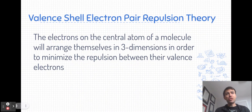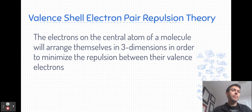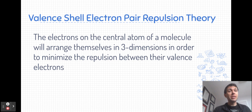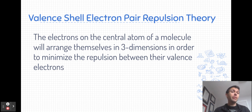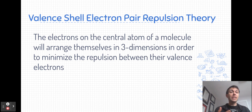Let's begin with the definition. Valence Shell Electron Pair Repulsion Theory, VSEPR theory, states that the electrons around a central atom of a molecule will arrange themselves in three dimensions in order to minimize the repulsion between their valence electrons. This is a theory of bonding which tries to account for the observed shapes of molecules and also to predict the shapes of different combinations of atoms.